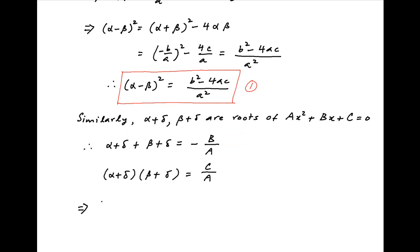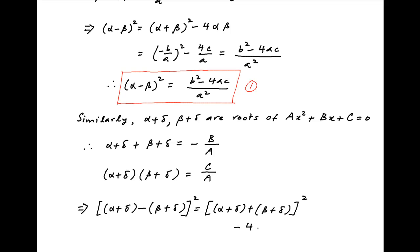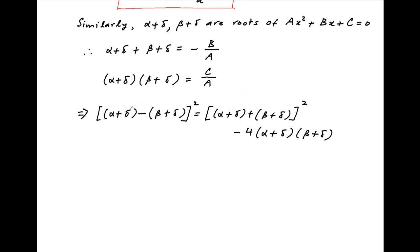Now note that (alpha plus delta minus (beta plus delta))² is equal to (alpha plus delta plus beta plus delta)² minus 4·(alpha plus delta)·(beta plus delta). The left-hand side simplifies to (alpha minus beta)², and on the right-hand side, substituting the values obtained earlier, we get (minus B upon A)² minus 4·(C upon A).